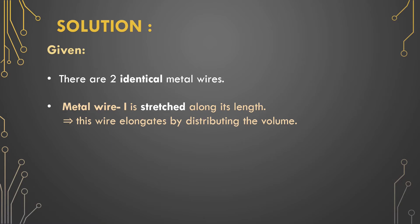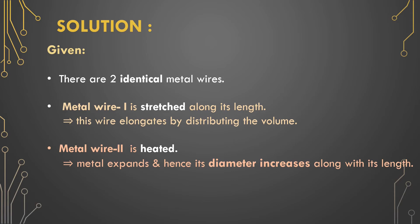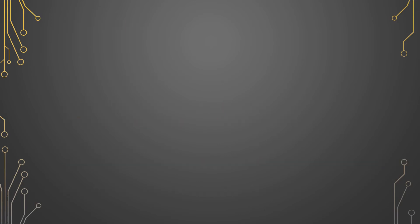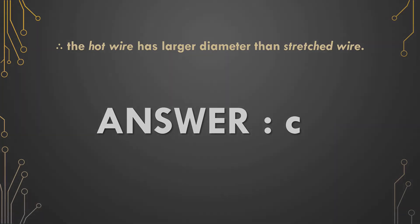We also know that metals are good conductors of heat. Here we heat metal wire 2, and as a result it expands — the diameter increases along with its length. The question tells us that the resultant length of the two wires is the same. This means that metal wire 2, the hot wire, has a larger diameter than the stretched wire. The right answer is option C.